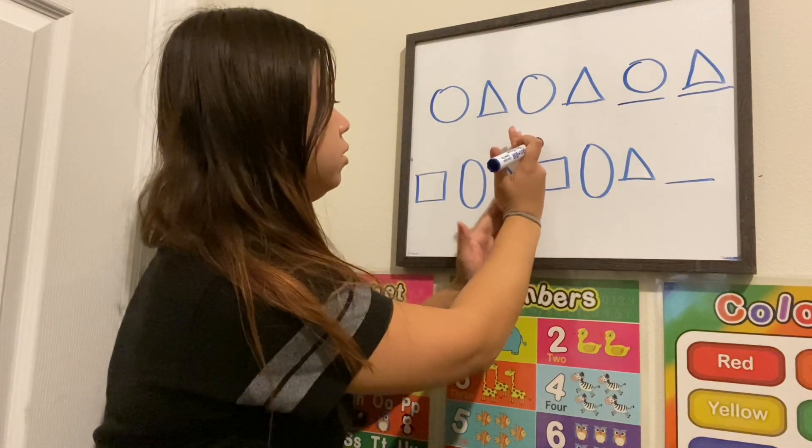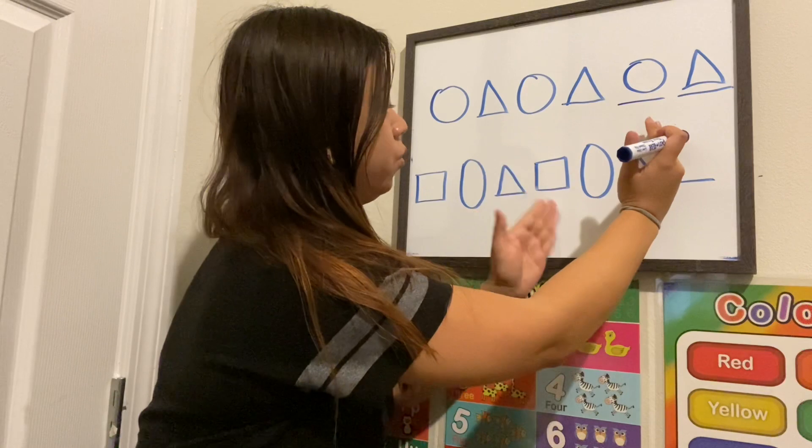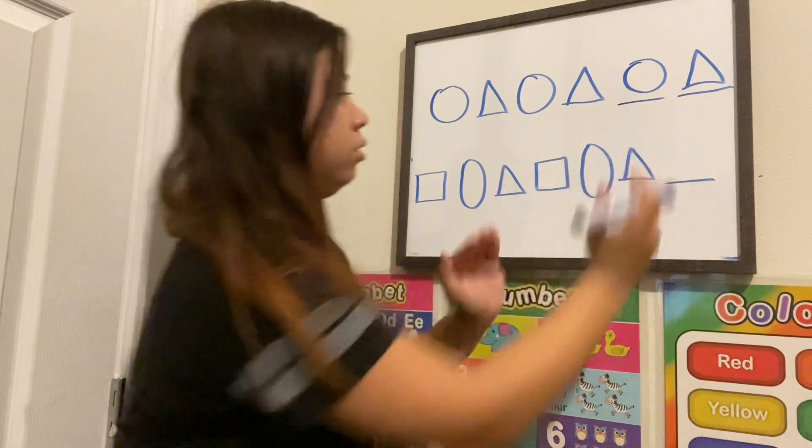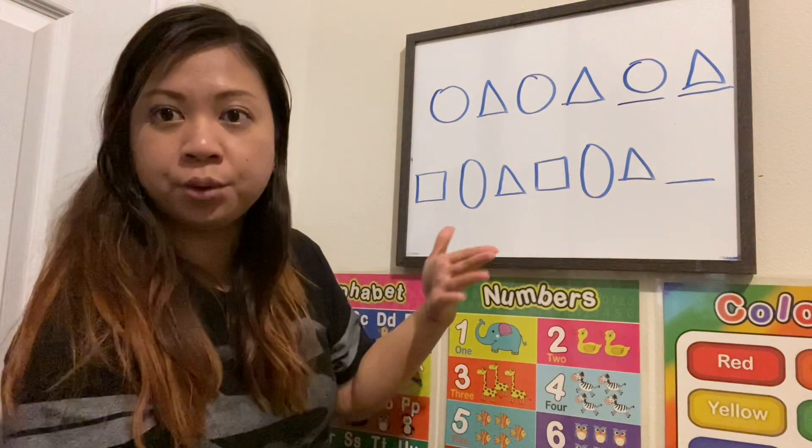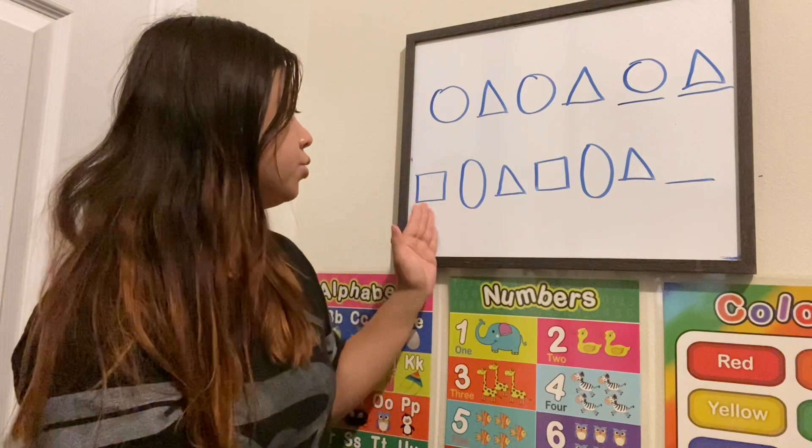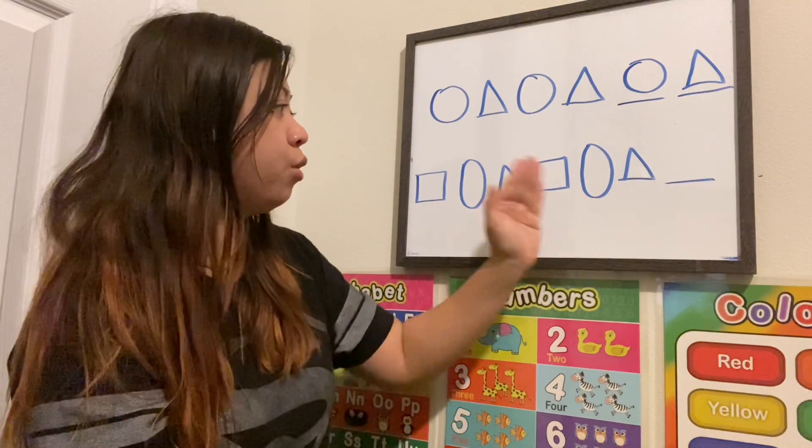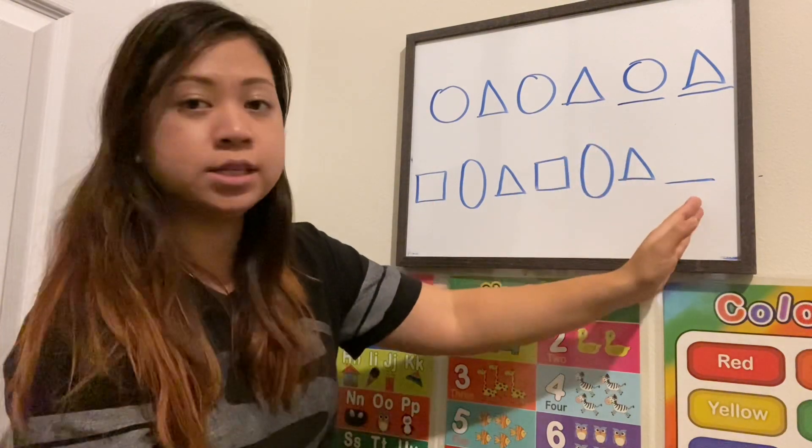If you move over, it's square, oval, triangle. Okay, so you see that you're repeated: square, oval, triangle, square, oval, triangle. What do you guys think comes next?